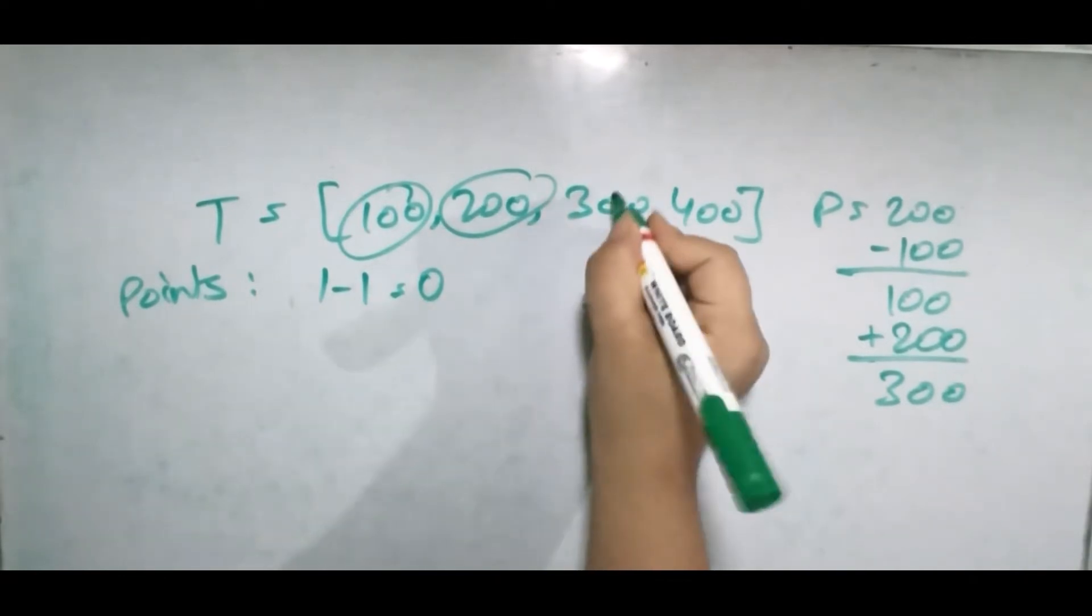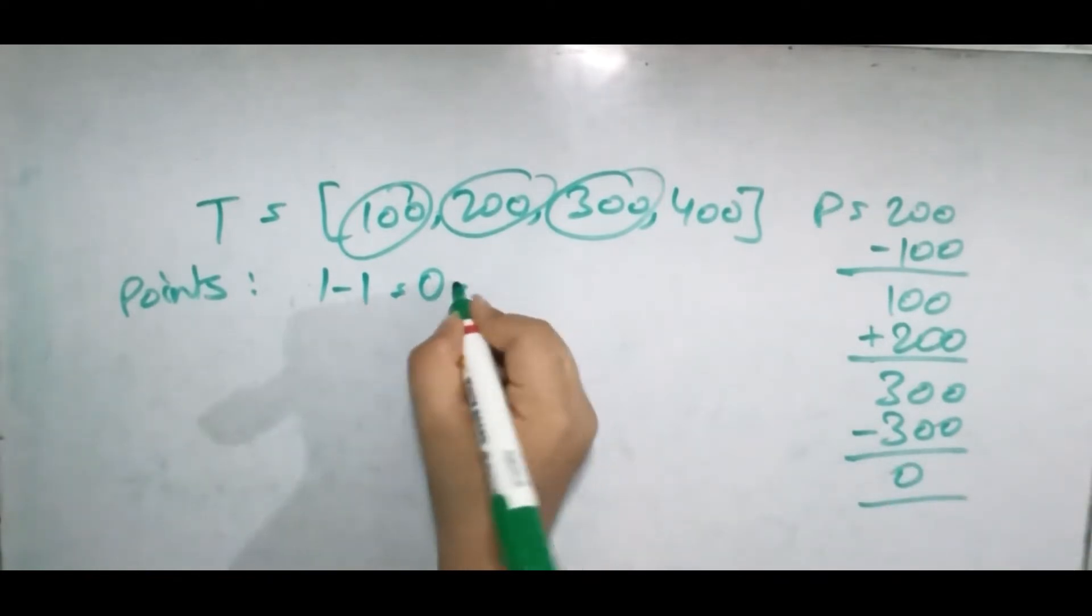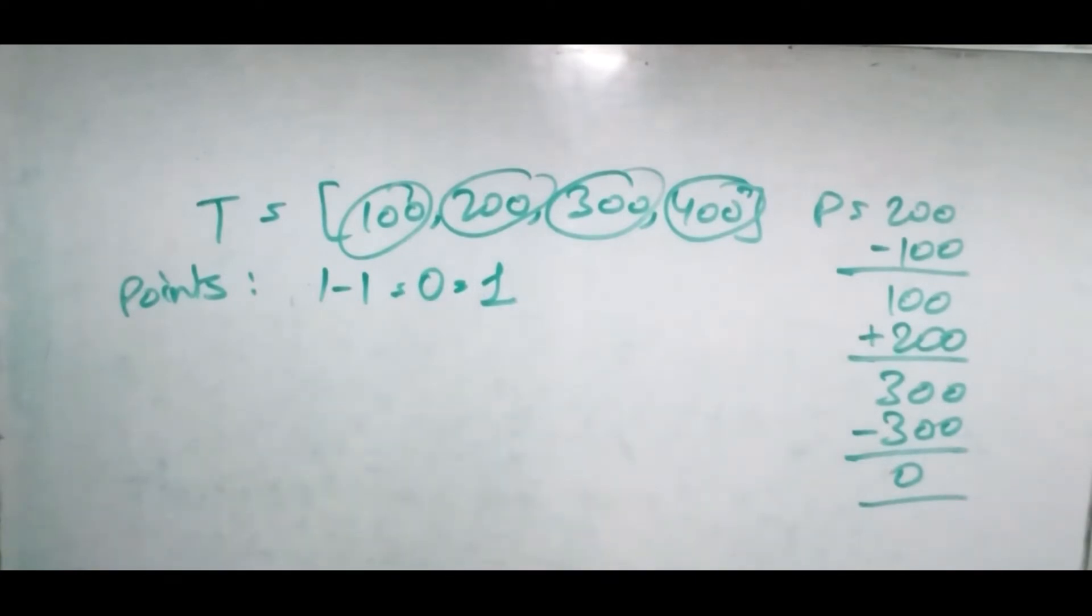Now we're again using it face up, so we decrease the value by 300 to zero, and it becomes one again. And now we can again use it face down, so it becomes zero points and 400 power.